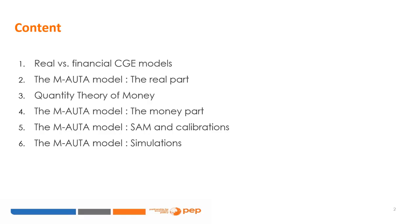Welcome to the introductory financial CGE modeling course. In this module we will learn how to build simple financial CGE models. We will start with very simple models but add complexity step by step, using the material developed in the book of De Callaway, Martins and Savard, 2001, to present CGE models such as AUTA, AUTETA and EXTER. These real models should be very well known by all of you, but we will add the money and financial dimension.